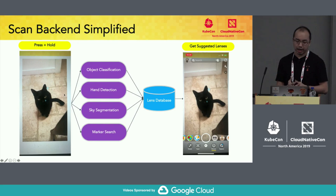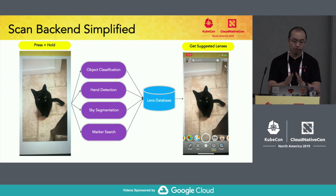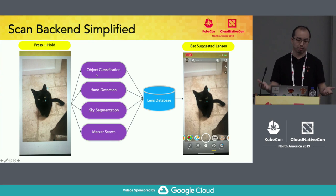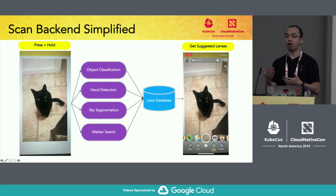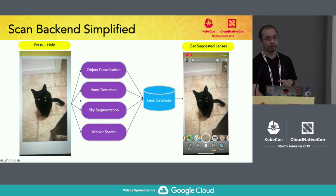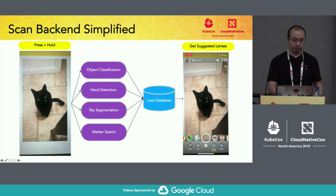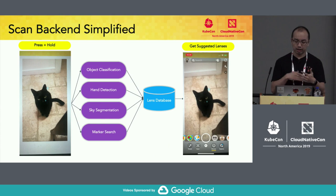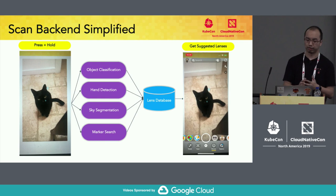With Scan, we aim to find the perfect lens for the content of your snap. When you start a scan request by pressing and holding in the Snapchat app, it fans out the request image to a bunch of different algorithms — an object classification model, a hand detection model, a sky segmentation model, an instance retrieval algorithm that matches your image against a list of marker images, and more. After this, we have a list of highly confident concepts or instances predicted from your image content, and we match it against a lens database. We retrieve a bunch of lenses, do personalized sorting, and give you a list of suggested lenses tailored to the content of your snap.